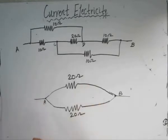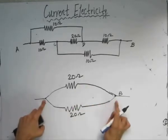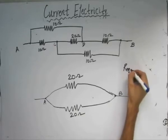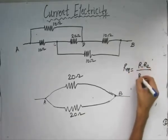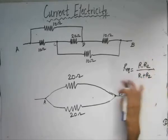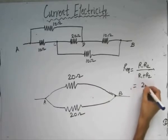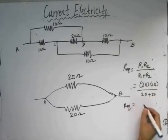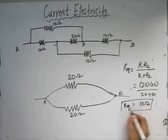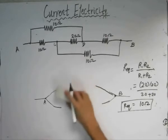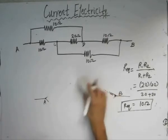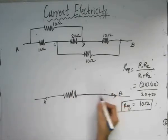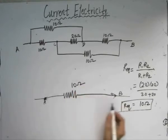Now these two 20-ohm resistors are connected in parallel, since both endpoints are in common. The equivalent resistance for two resistors in parallel is R1 times R2 divided by R1 plus R2. With R1 and R2 both equal to 20 ohms, we get the equivalent resistance as 20 times 20 divided by 20 plus 20, which equals 10 ohms.